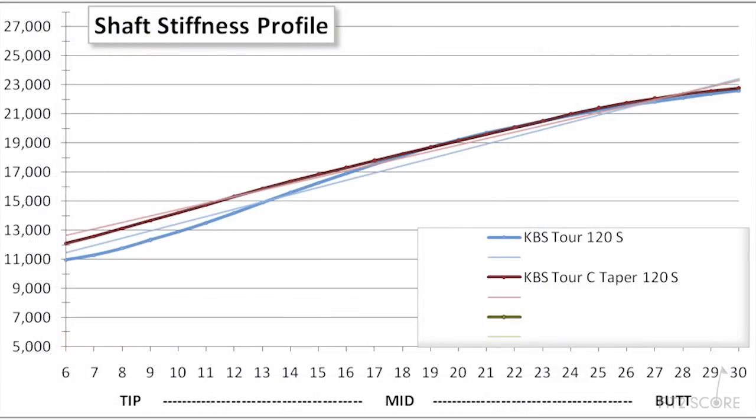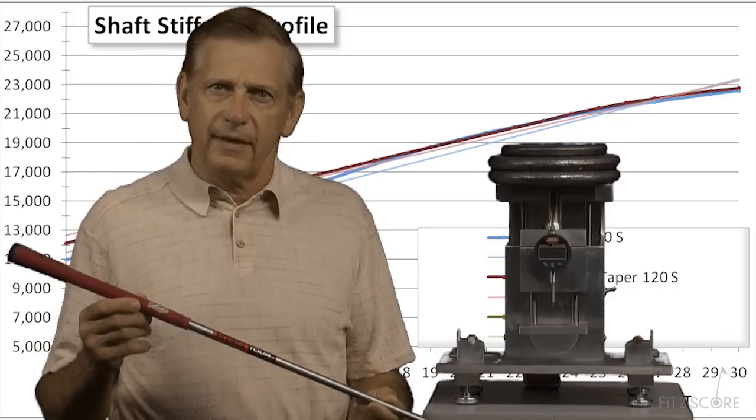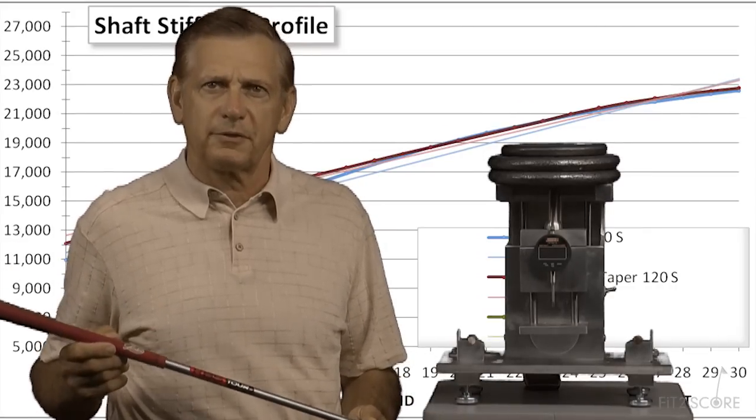Let's take a quick look at what they show us. Let's take a look at some KBS iron shafts. The red line is the new C taper. The blue line is the KBS tour. We can clearly see that the new design has a stiffer tip section. This will create the lower trajectory, lower spin flight sought by better players. We know this before we go into a fitting.